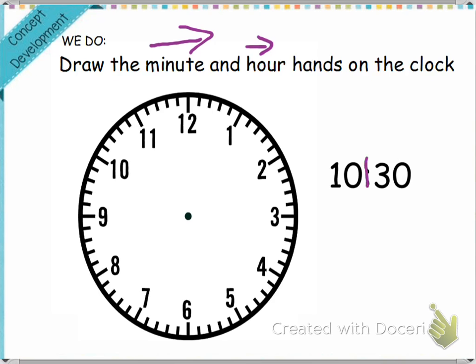Looking at this, we know that the 10 shows us the hour and the 30 shows us the minute. So 10:30. Now we know that since it's 30, that 10 is going to be just a little bit past 10.